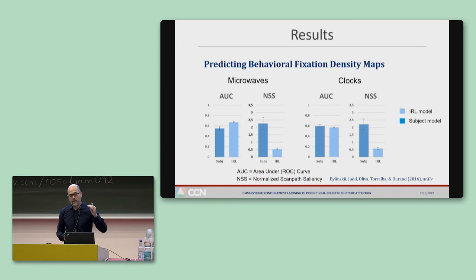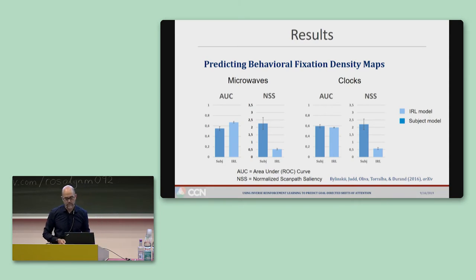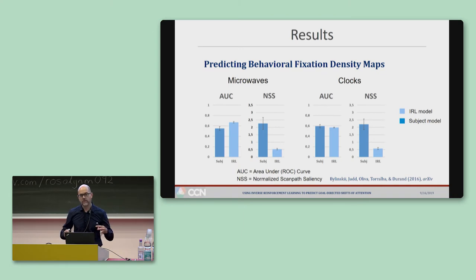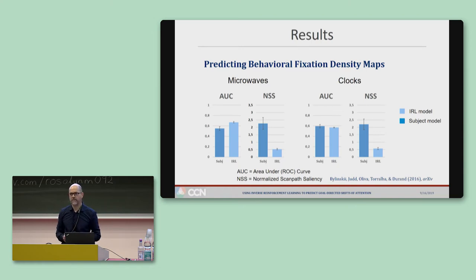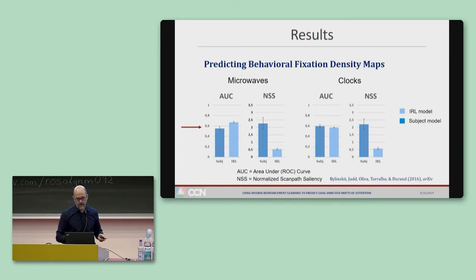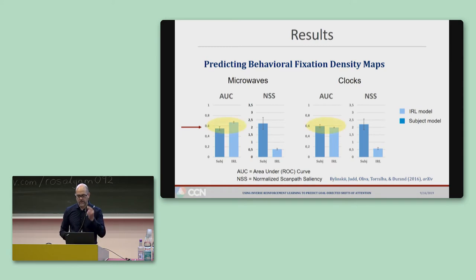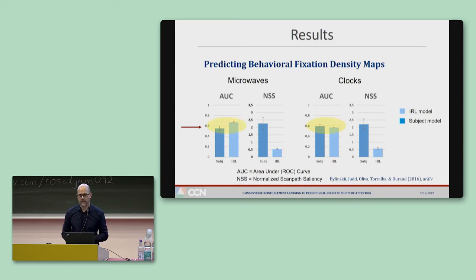Here's how well our model predicted behavioral fixation density maps using two popular metrics, where higher values indicate better predictive success. There's also a subject model computed using leave-one-out, providing a practical noise limit on the model's ability to predict group behavior. Our model did a good job predicting fixation density maps — at least according to AUC, where predictions were about as good as you can expect based on the subject model.